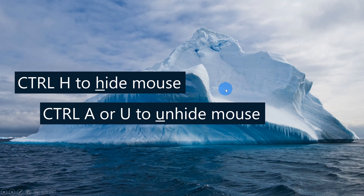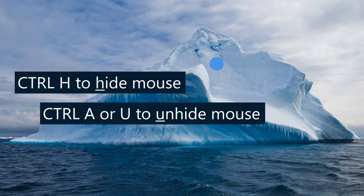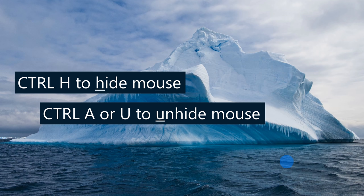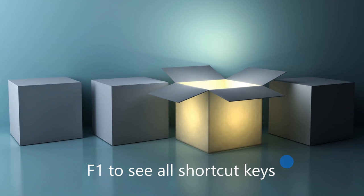Sometimes you don't want your mouse to appear on the slide. Press Ctrl+H to hide the cursor — H stands for hide. To bring the cursor back, press Ctrl+A for arrow, which returns the cursor. Alternatively, press Ctrl+U — U stands for unhide — and that also brings the cursor back. So both Ctrl+A and Ctrl+U will show your cursor again after you've hidden it with Ctrl+H.